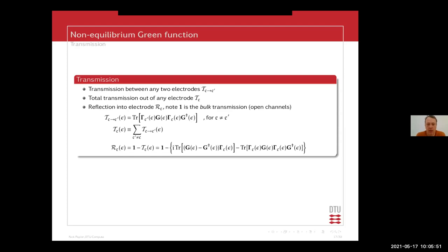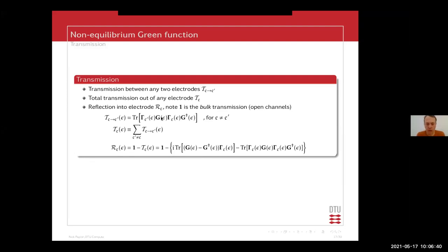There are three transmission calculations. You can calculate your transmission between any two electrodes. The term G gamma G is your spectral matrix — think of it as your spectral density of states, matrix A. That is what propagates your electrons from a specific electrode into your device region. Your second gamma, or second scattering matrix, captures the electrons that originate from one electrode, and you can see how much of that electron leaves the other electrode by this term. The total transmission out of your electrode is just the summation of all electrode-to-electrode combinations.